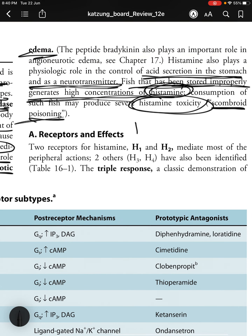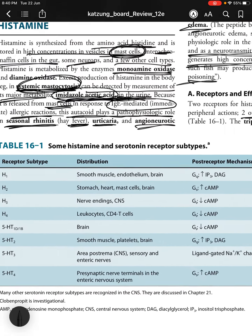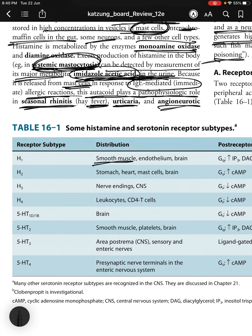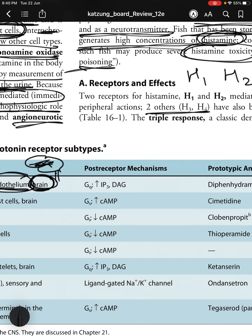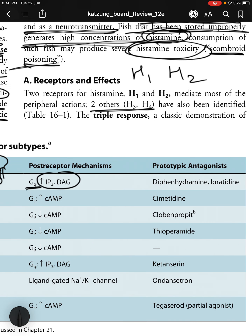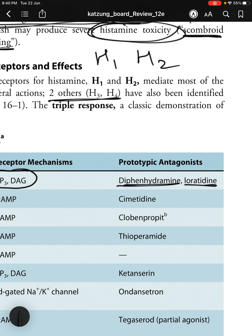There are two receptors mediating most peripheral histamine actions: H1 and H2. Two others, H3 and H4, have also been identified. H1 receptors are present in smooth muscle, endothelium, and the brain. The post-receptor mechanism is Gq-coupled, causing increases in IP3 and DAG levels. The prototypic antagonists are diphenhydramine and loratadine.